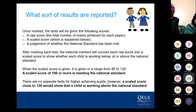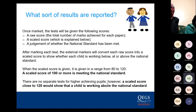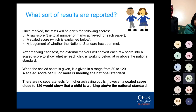How are the results reported? The children will be given a raw score — the total number of marks they've achieved on the paper — which will then be converted into a scaled score. A judgment will then be made whether the national standard has been met. External markers convert each raw score into a scaled score to show whether each child is working below, at, or above the year six expected standard. The scaled score is given in the range of 80 to 120, and that's the same every year. A scaled score of 100 or more means the child is meeting the national standard.